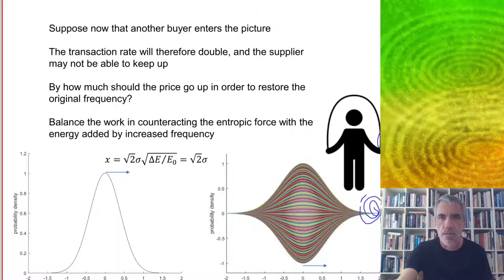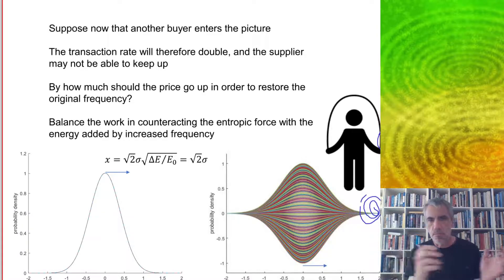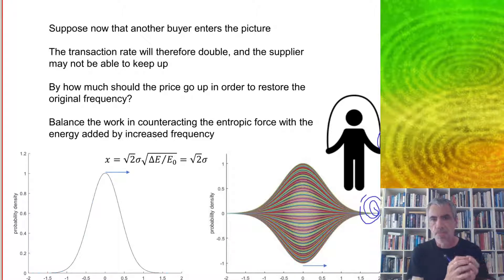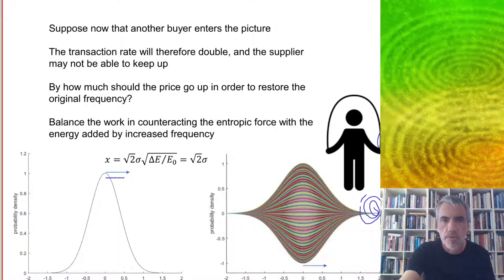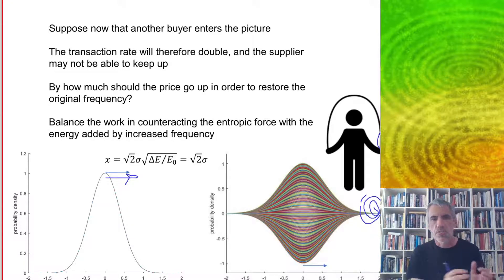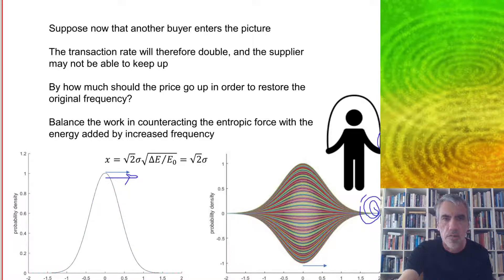But we can balance that with the entropic force, which is required to shift this propensity curve to the right. So if we increase the price to over here, we're shifting the propensity curve, then that requires energy. We balance that with the energy that we're getting from the increased frequency, and from that we get this equation that x is equal to the square root of 2 times sigma. So this is the same as the price impact rule that we looked at earlier in the last lecture.